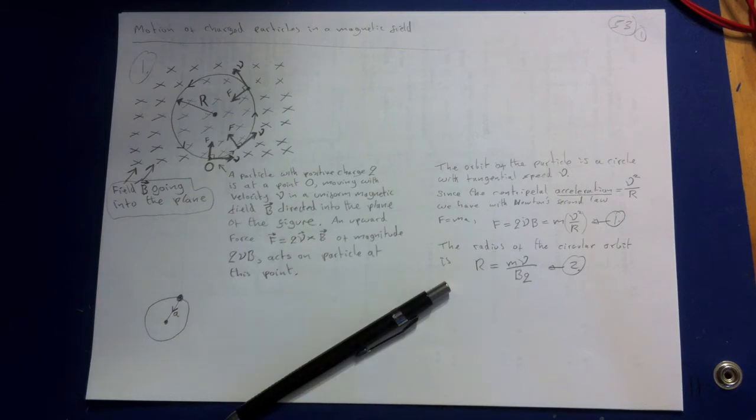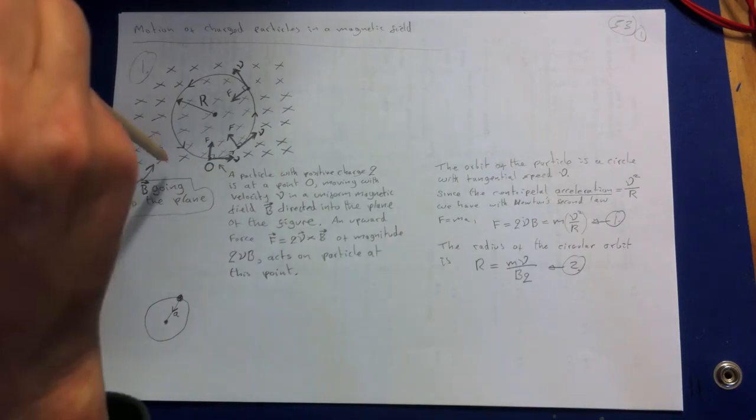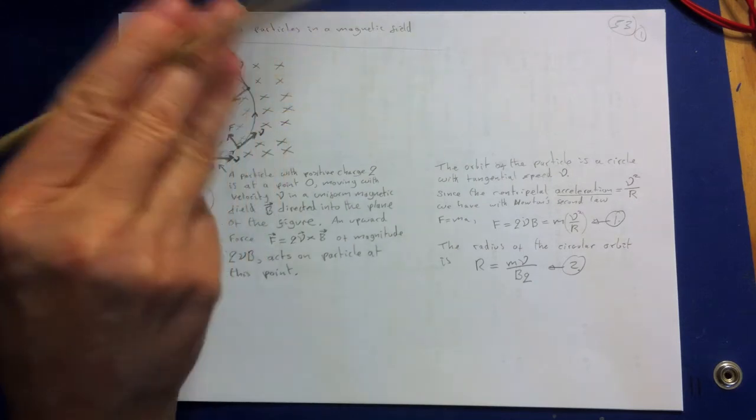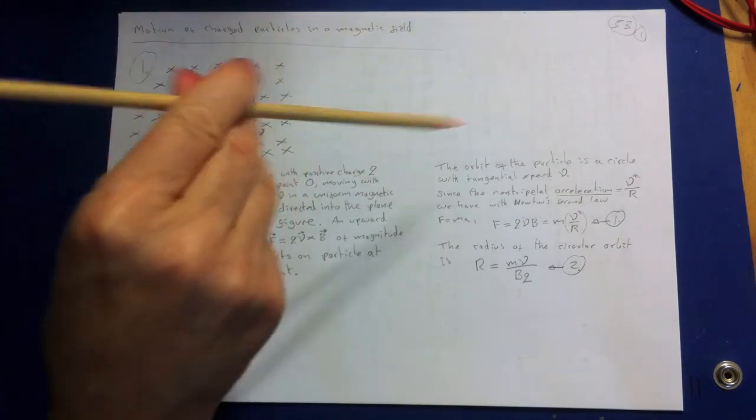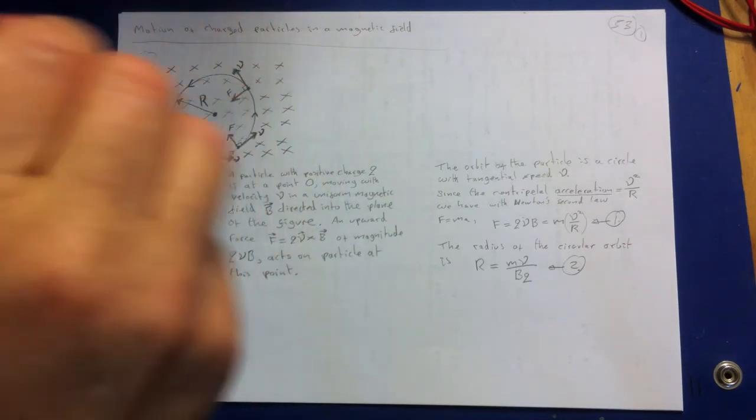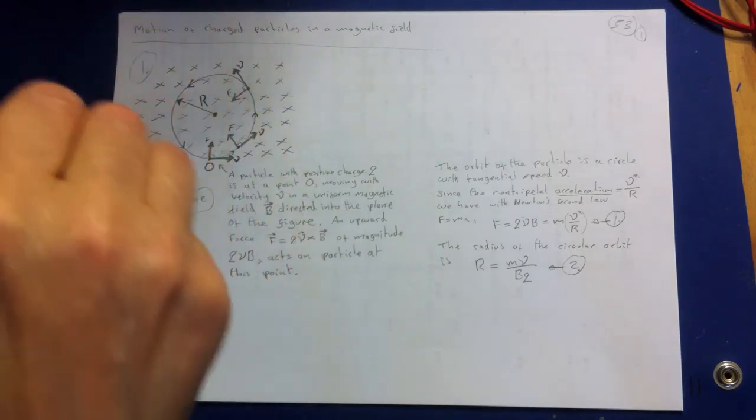If the direction of the initial velocity is not perpendicular to the field, the velocity component parallel to the field remains constant and the particle moves in a helix. You've got your magnetic field going down and the velocity is going that way. But let's say the velocity is going that way and the magnetic field is down. If it's going that way, we end up moving through a helix. And you can see that in bubble experiments.